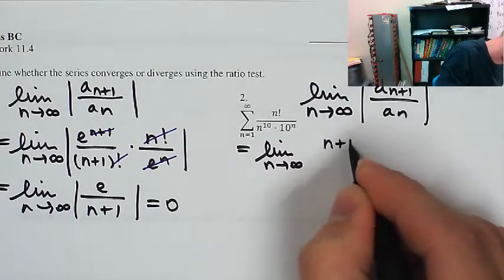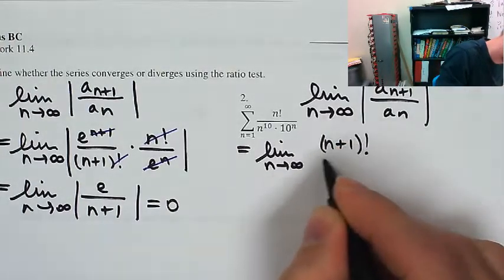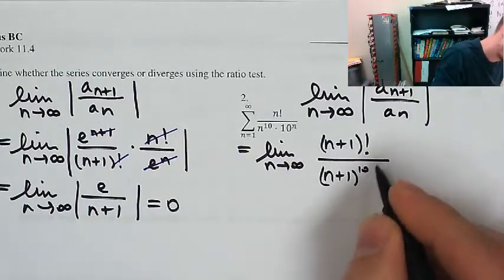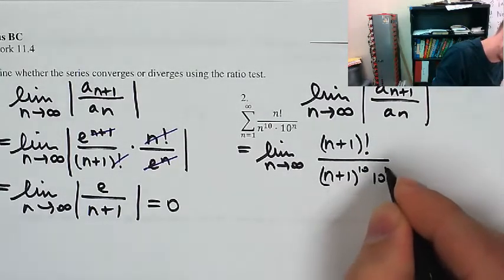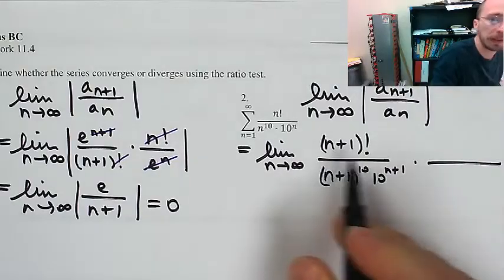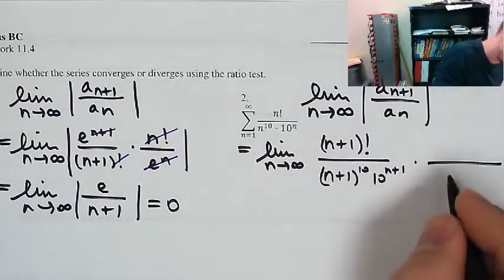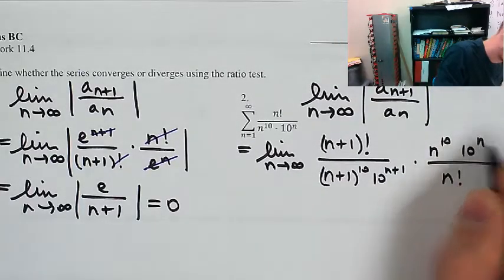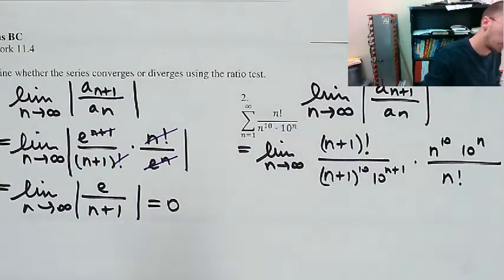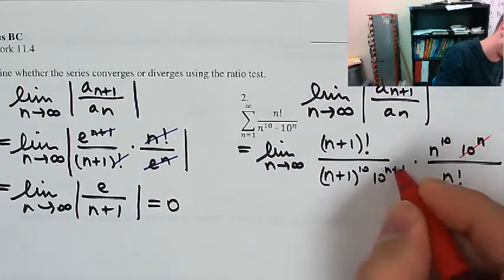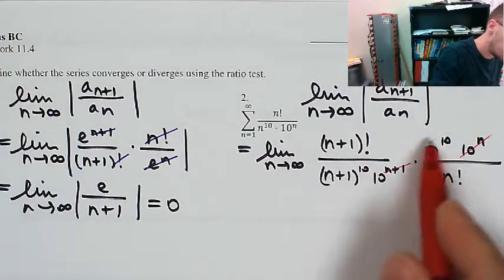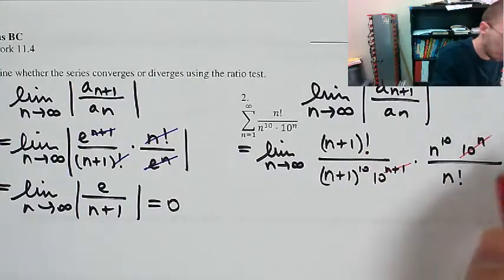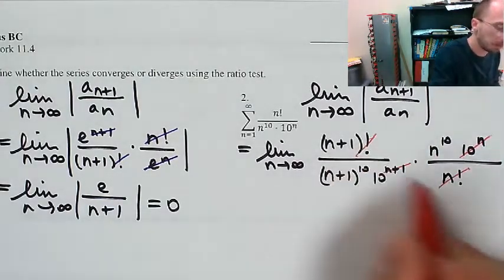That's going to be n plus 1 factorial divided by n plus 1 to the 10th, times 10 to the n plus 1, divided by the original terms — so that would be n factorial in the denominator, n to the 10 up here, and 10 to the n over there. I'll start canceling stuff: 10 to the n plus 1 and 10 to the n — all but 1 will cancel. I can't really do anything with those because they don't have the same base as the exponent, but I can work with n factorial and n plus 1 factorial — I'm just left with the n plus 1.